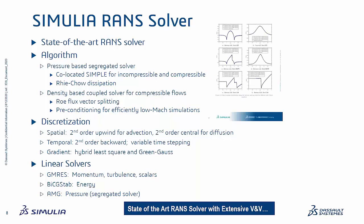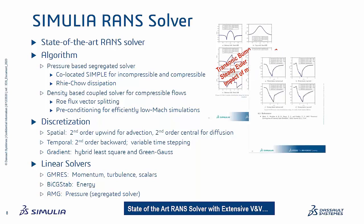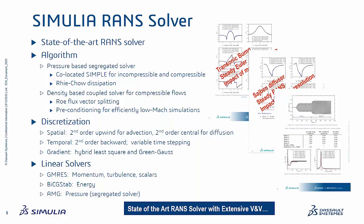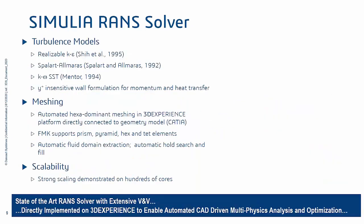A robust verification and validation effort has been done, including a transonic bump evaluating three meshing scenarios—coarse, medium, and fine—and comparing against experimental data; the Sabin diffuser with coarse, medium, and fine meshes to ensure grid-converged solutions; and simulation past a circular cylinder evaluating vortex shedding downstream for different time steps and mesh resolutions. These are fundamental flows often evaluated as part of initial CFD product development, and Michael will share more industrially relevant applications later in the presentation.